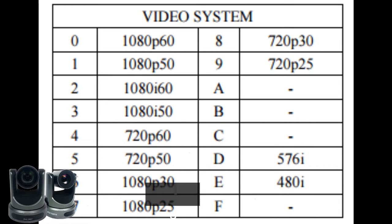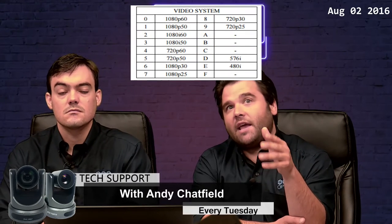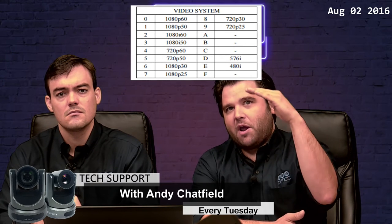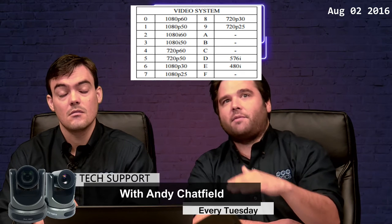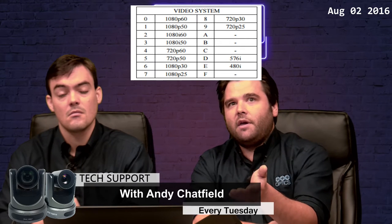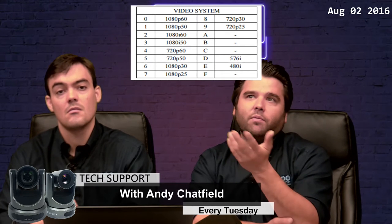We do have a couple of interlaced signals as well: 1080i 60 and 1080i 50. With progressive, it's refreshing the entire image every frame — so 1080p 60 is refreshing the entire screen 60 times a second. 1080i 60 actually refreshes half the frames. Think of it like an American flag: all the white stripes one frame, then all the red stripes the next. So 1080i 60 and 1080p 30 are very similar and use the same bandwidth, but 1080p 30 is better for movement and motion.